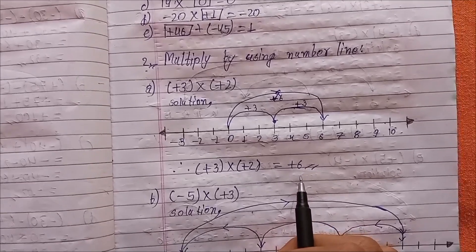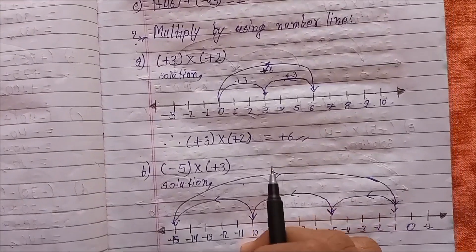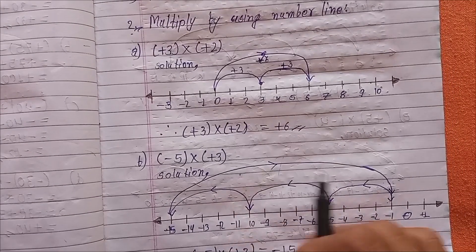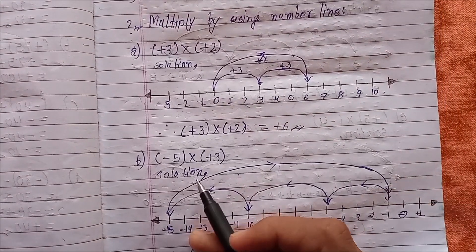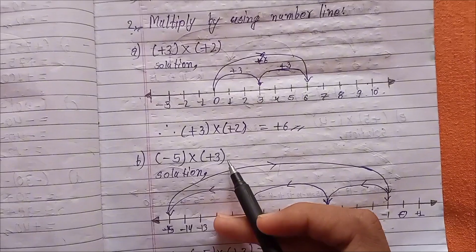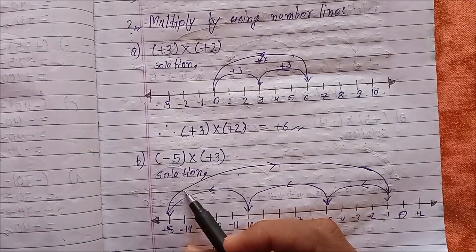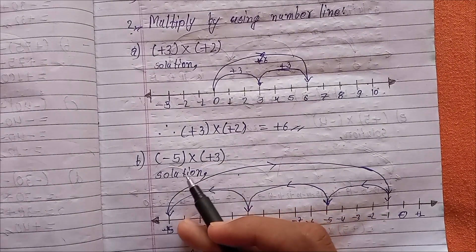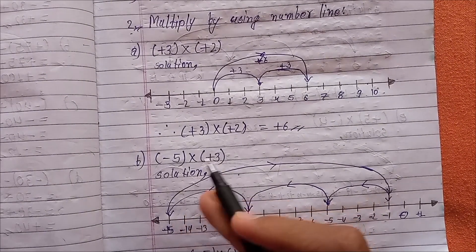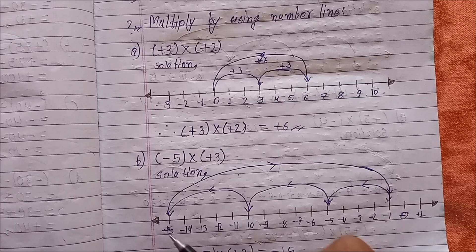(b) minus 5 multiplied by plus 3. Solution: minus 5 multiplied by plus 3.